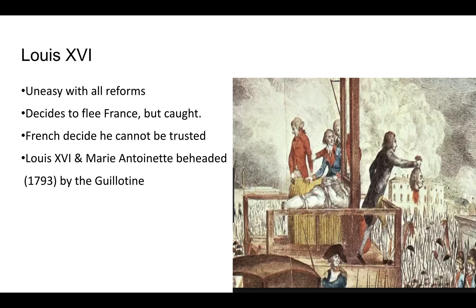When they are caught escaping, the extremists in France decide they can no longer trust the king — believing he was trying to leave and create an army to come back. Various conspiracies develop. So Louis XVI and Marie Antoinette are beheaded in a public square by the guillotine, which was seen as a more humane way to behead someone because it was done in one quick swoop. That happens in 1793 — for the first three or four years of the revolution, Louis XVI was still there and not in immediate danger until he tried to escape.